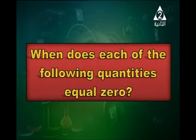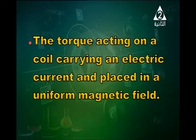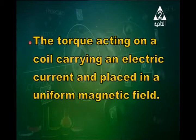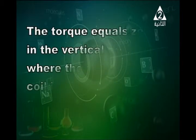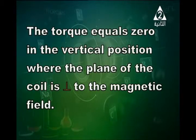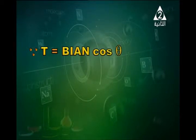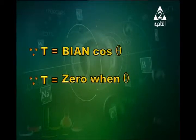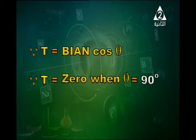When does the torque acting on a coil carrying an electric current placed in a uniform magnetic field equal zero? It happens in the vertical position, where the plane of the coil is perpendicular to the magnetic field. Torque is calculated from B·I·A·n·cos θ. In the vertical position, θ equals 90°, and cos 90° equals zero, so the torque is zero.